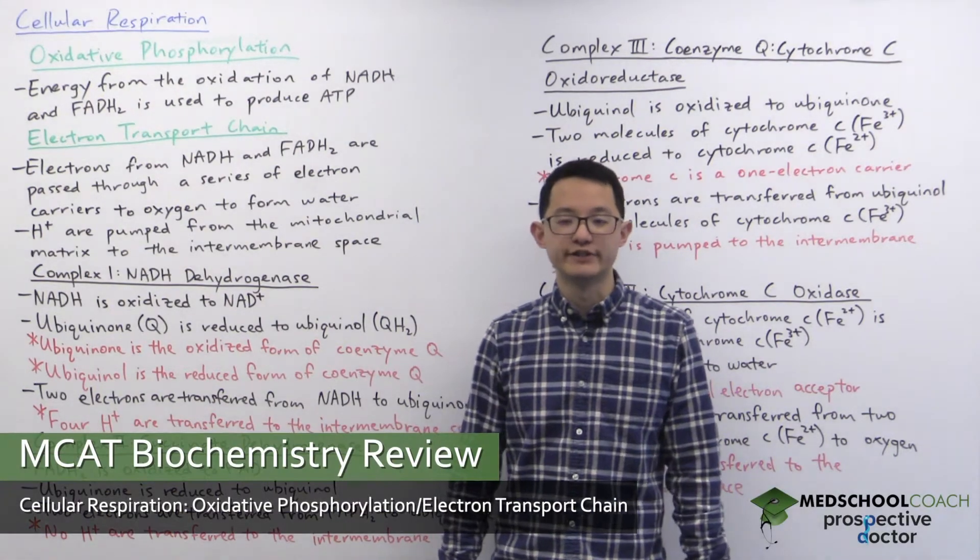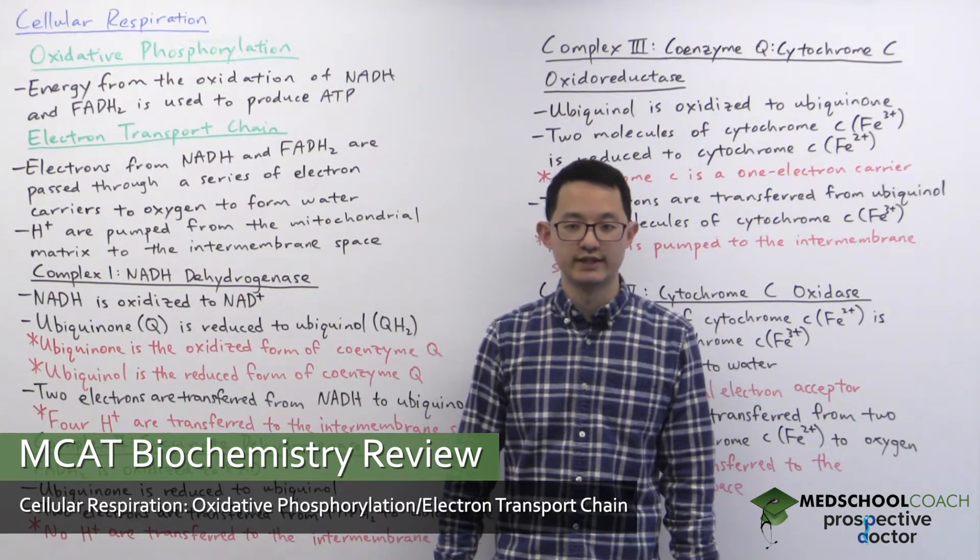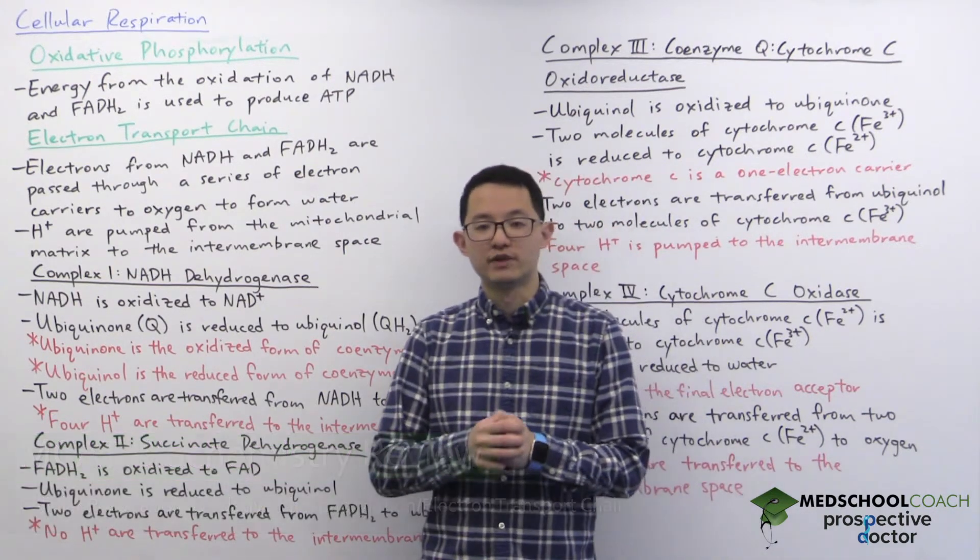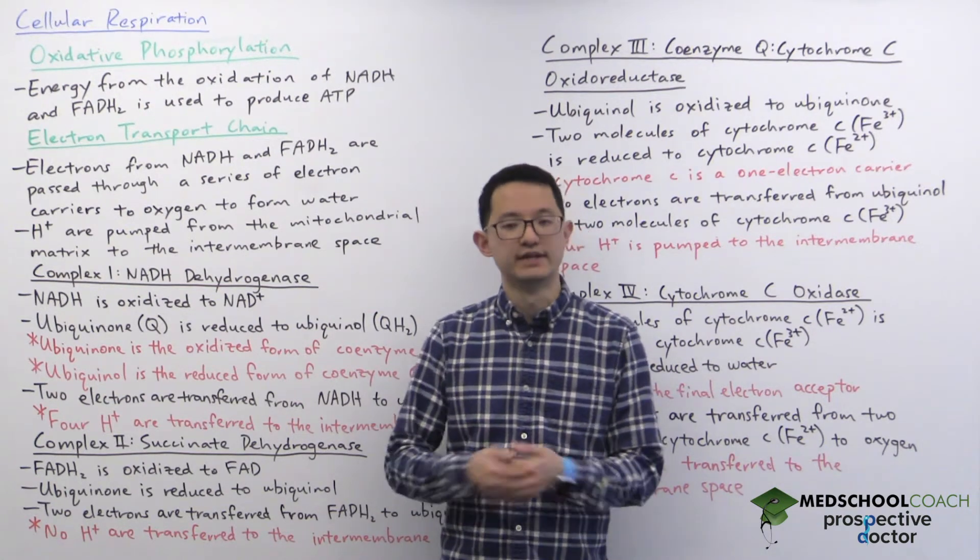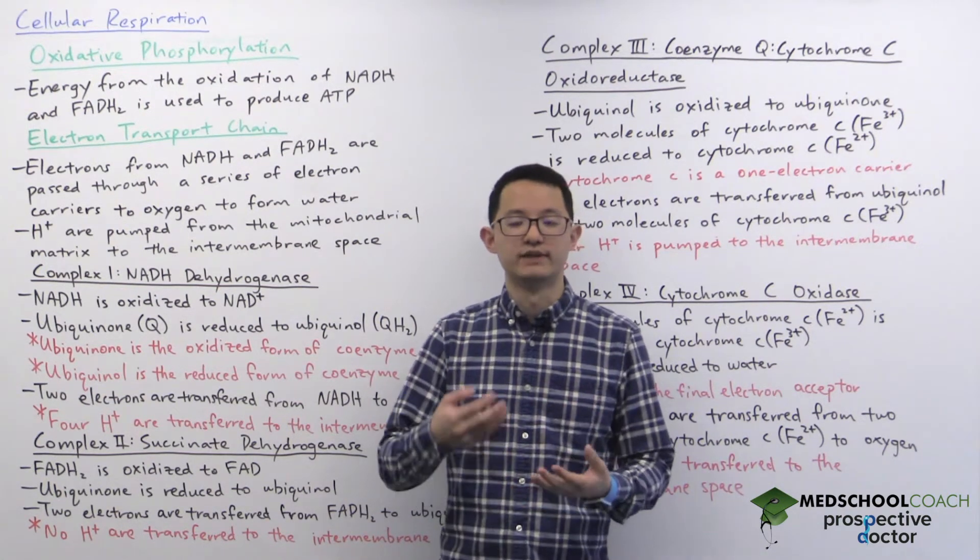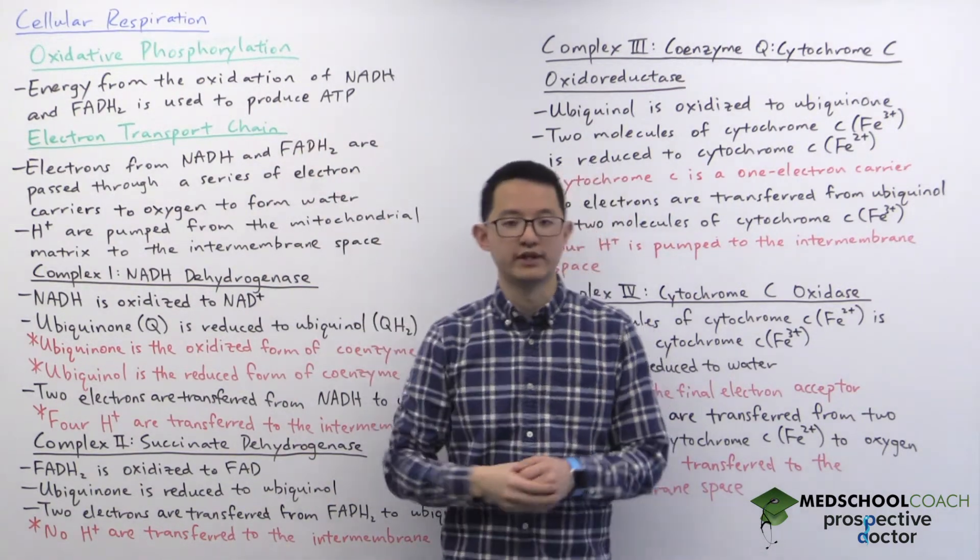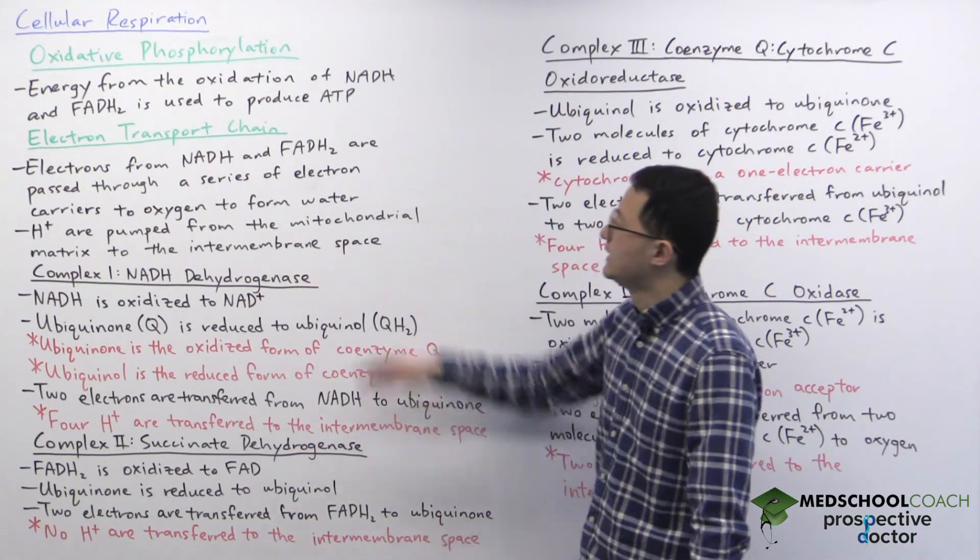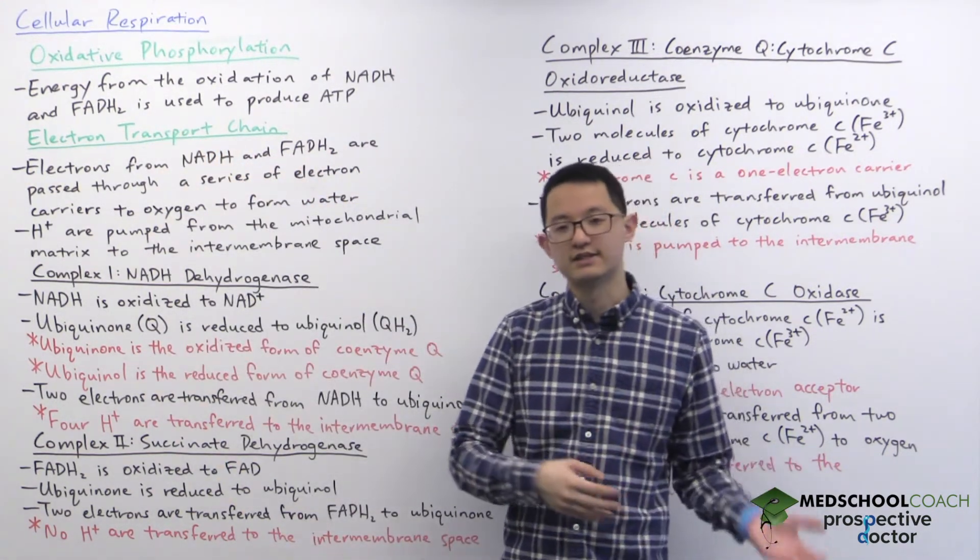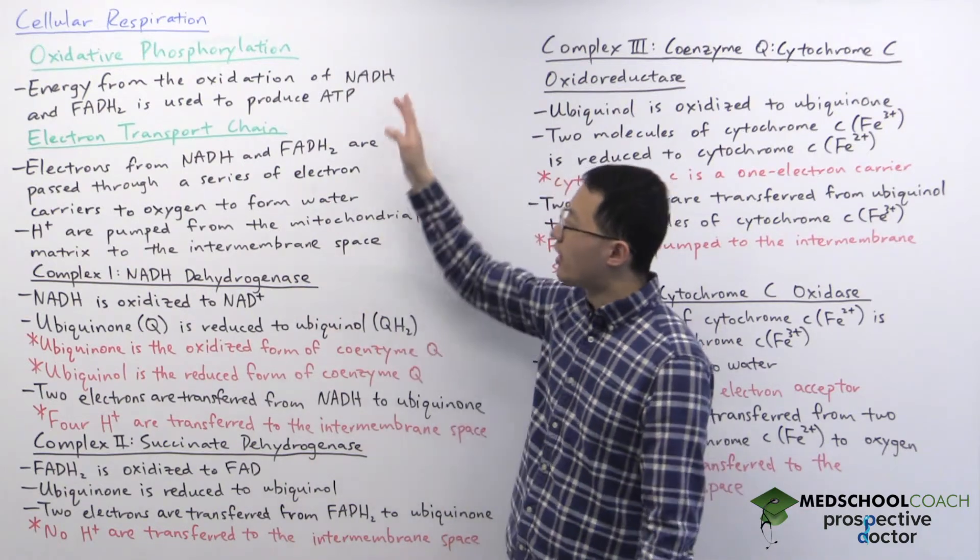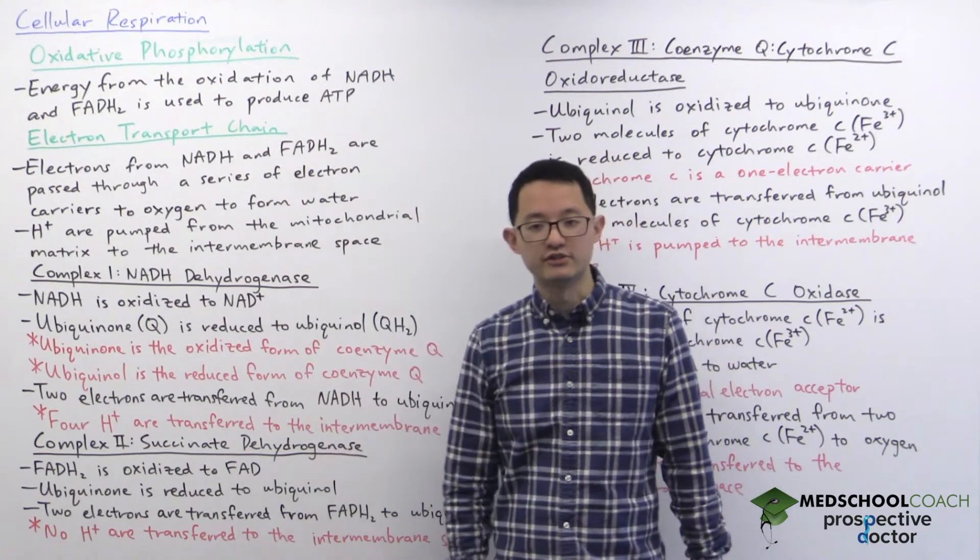In this video we're going to introduce oxidative phosphorylation and discuss the electron transfer chain. So far from glycolysis and the citric acid cycle we've produced a few molecules of ATP and GTP, but the bulk of ATP production actually occurs in oxidative phosphorylation, which essentially is using the NADH and FADH2 that have been produced from glycolysis and the Krebs cycle, oxidizing them to produce a proton gradient that is used to produce ATP.